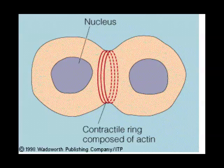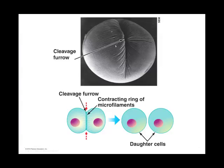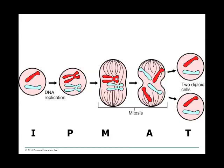Here you can see the contractile ring, which is actually made up of fibers — part of the cytoskeleton — where they pull in. The cytoskeleton does flagella and cilia and allows for movement. In this case it's pulling in the fibers to create two cells. It's also called a cleavage furrow. Eventually you're going to see two daughter cells. I put this all together: I-P-M-A-T — interphase, prophase, metaphase, anaphase, telophase.